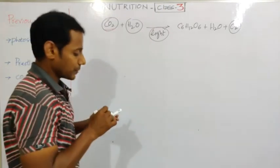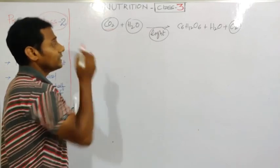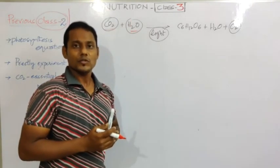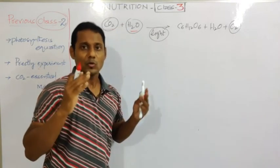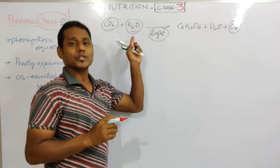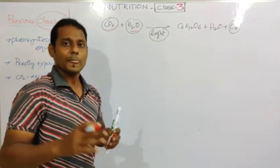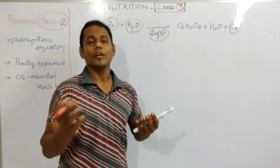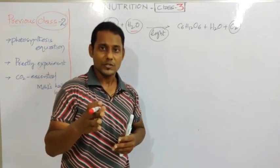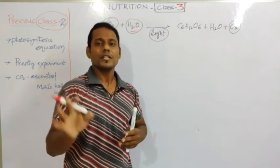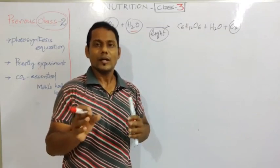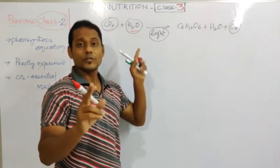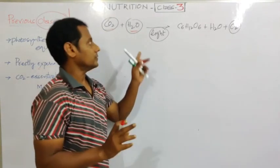Next, water is also essential for photosynthesis. We did an experiment where we deprived plants of water. When there is no water supplied to the plant, photosynthesis does not occur. This is a very simple experiment - without water, the photosynthesis process does not take place. So water is very essential for the photosynthesis process.